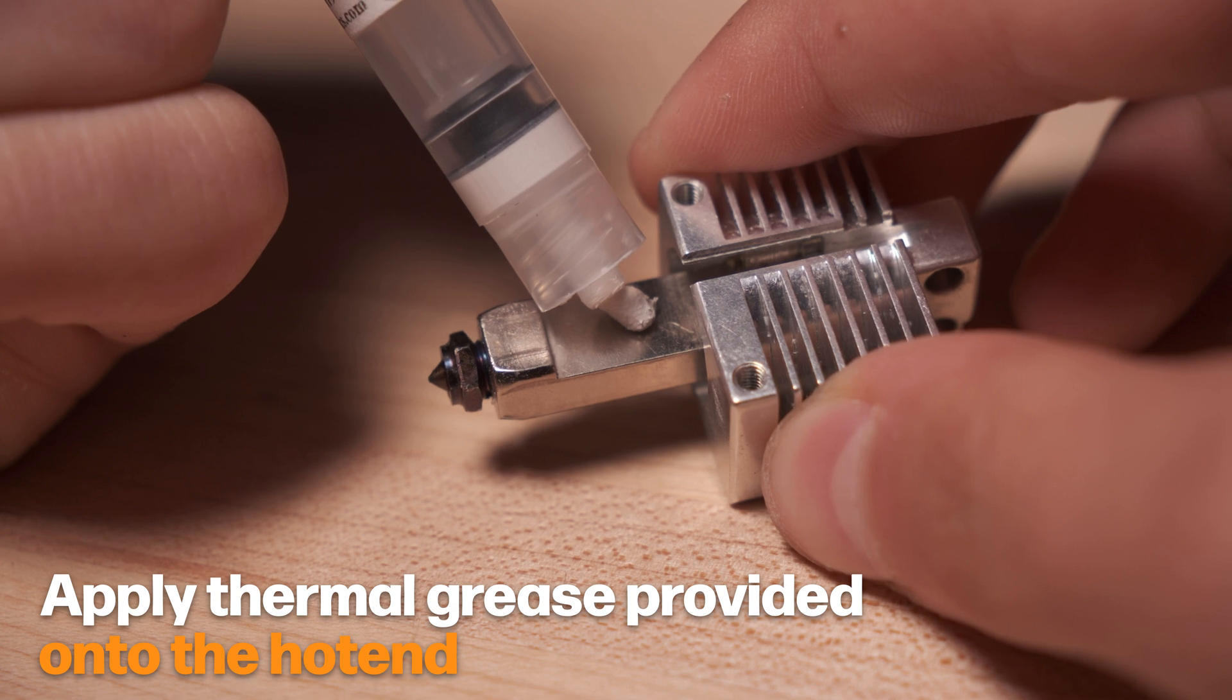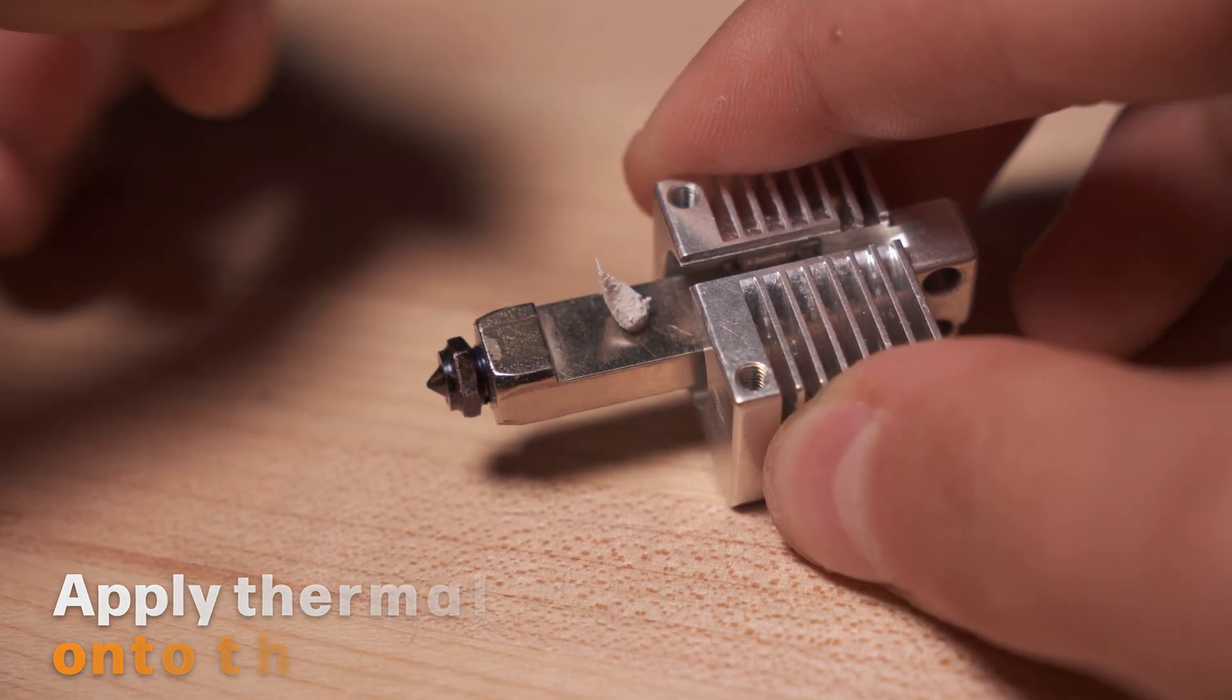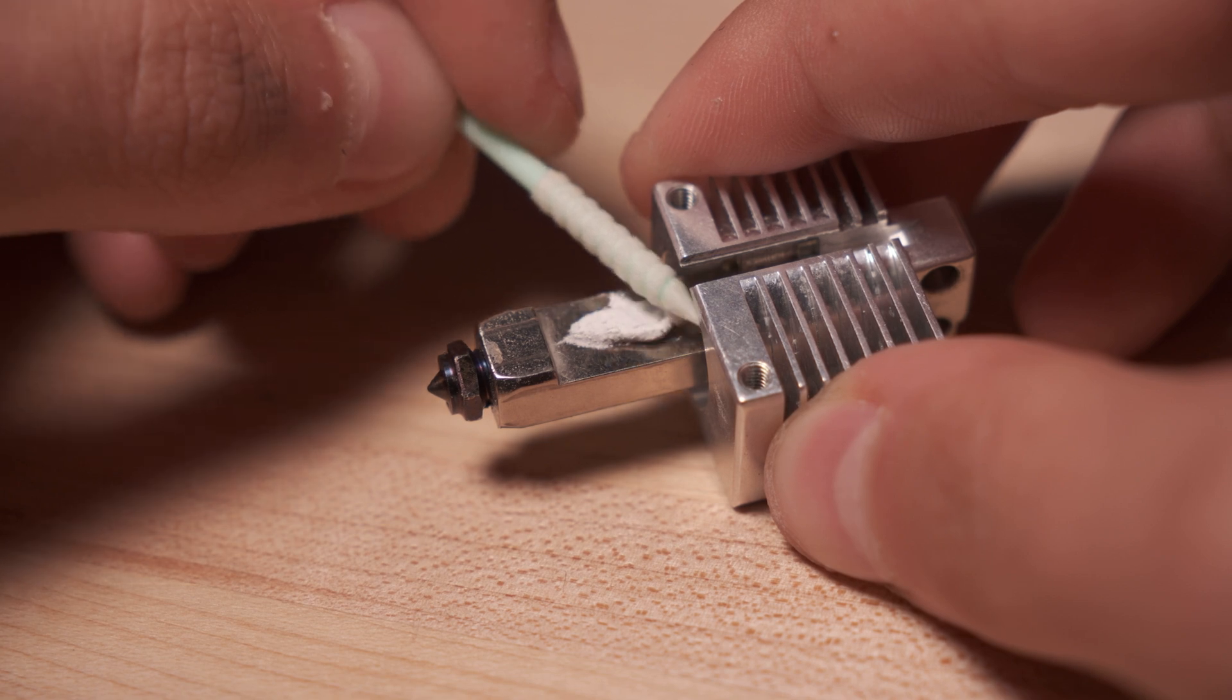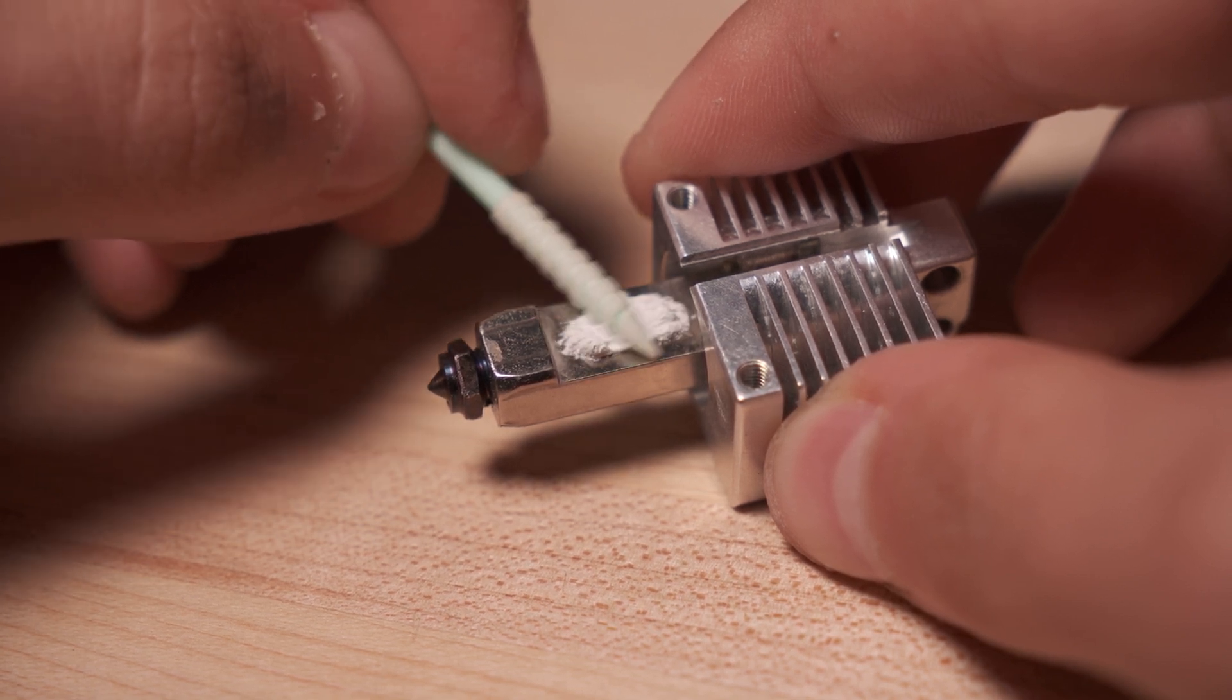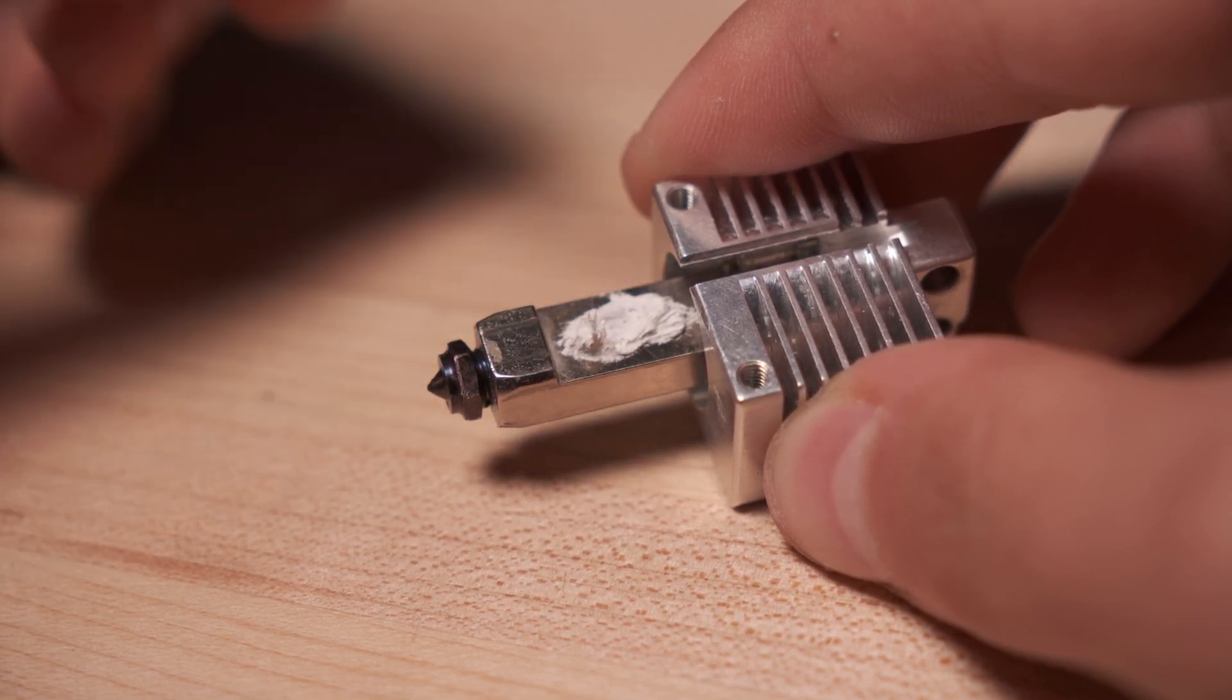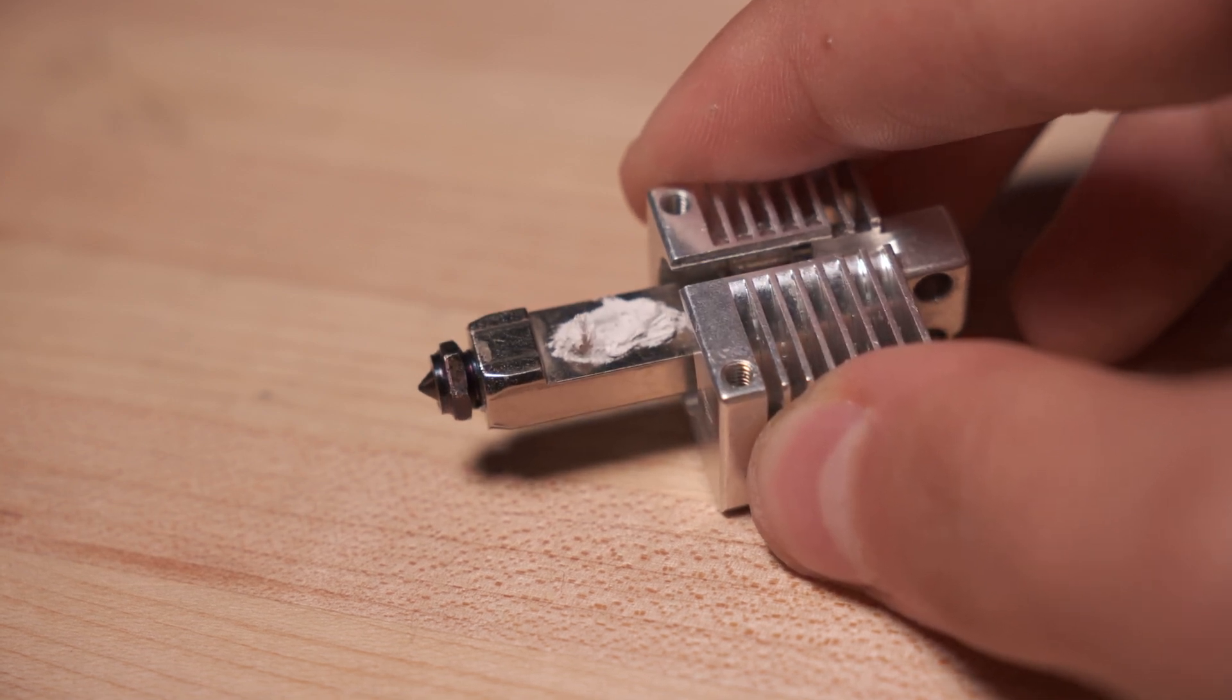First, coat the flat section of the hot block with thermal grease. Make sure to spread it out evenly so that the whole section is covered in the thermal grease pretty evenly. There's an included cotton swab in the Mako kit that you can use to do this job cleanly.